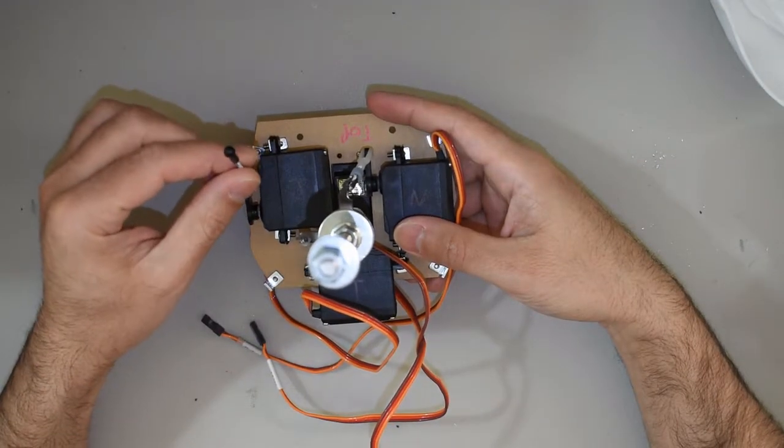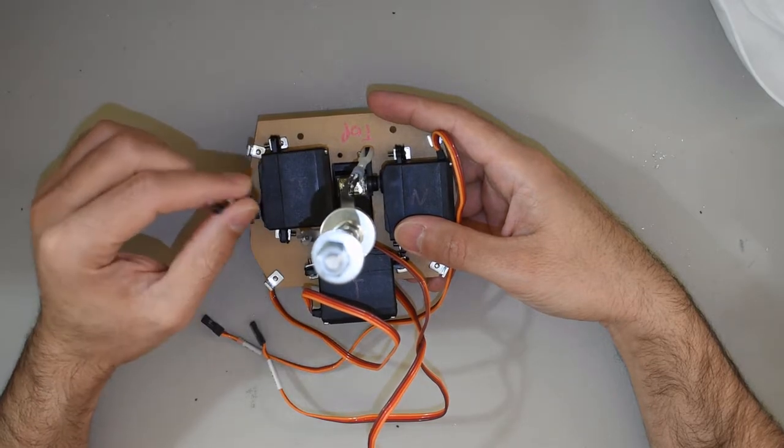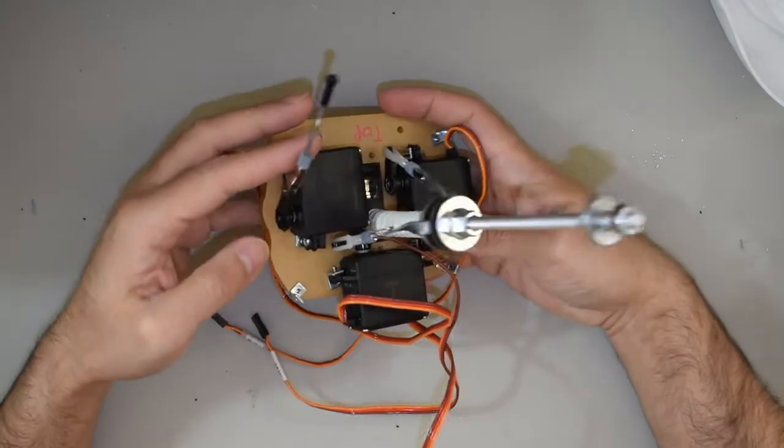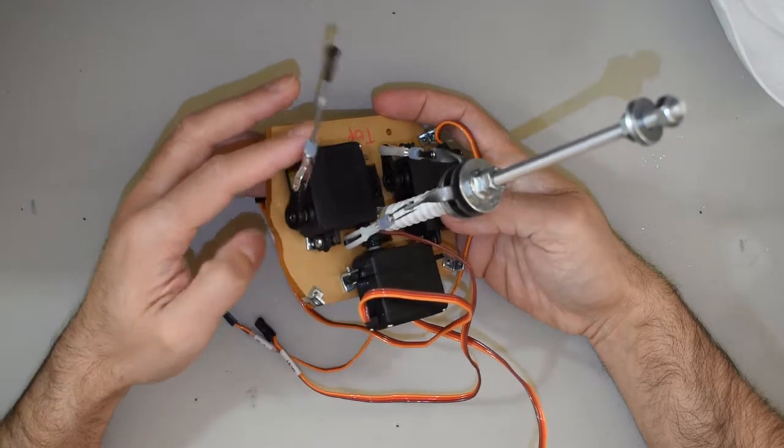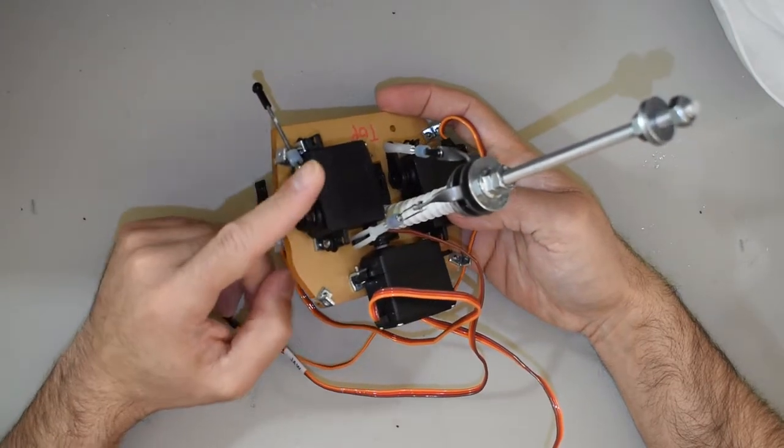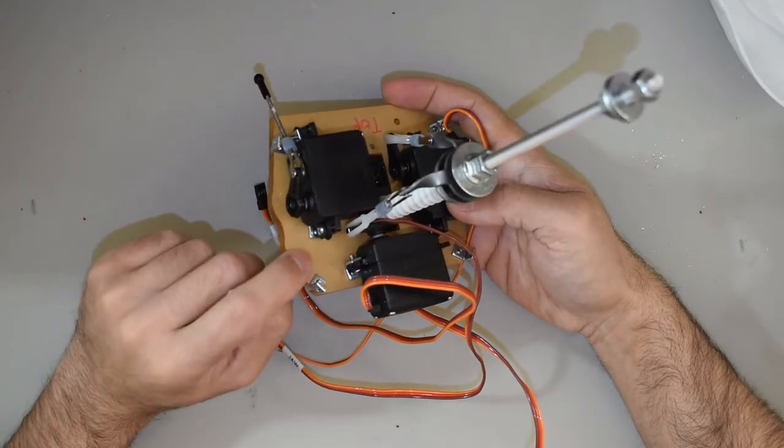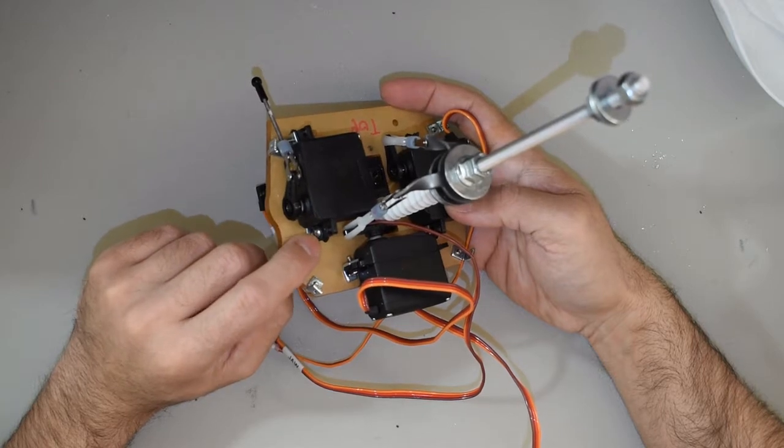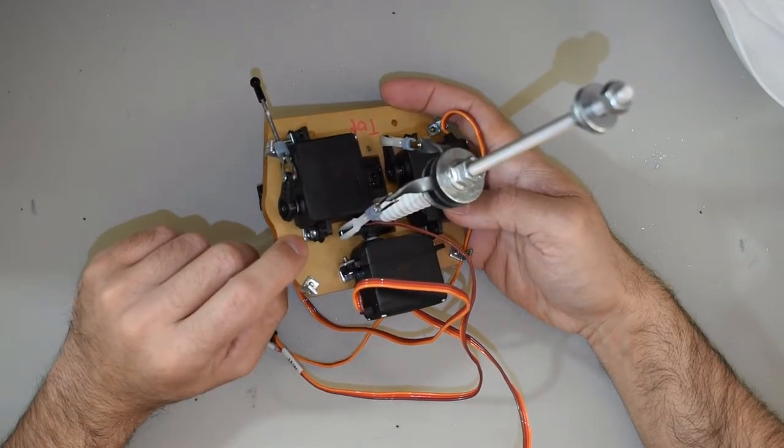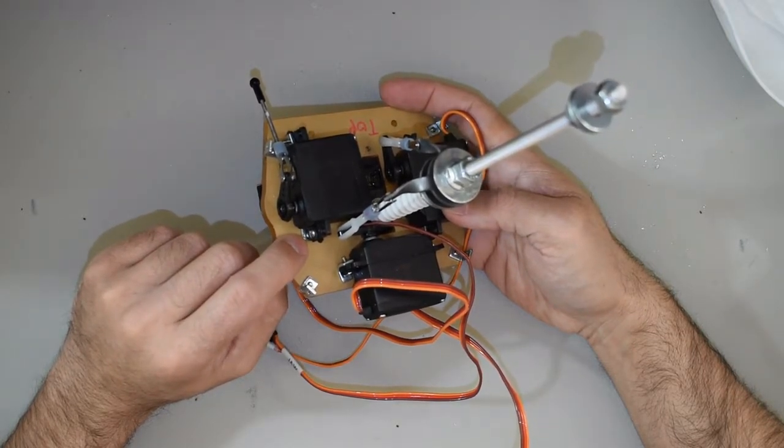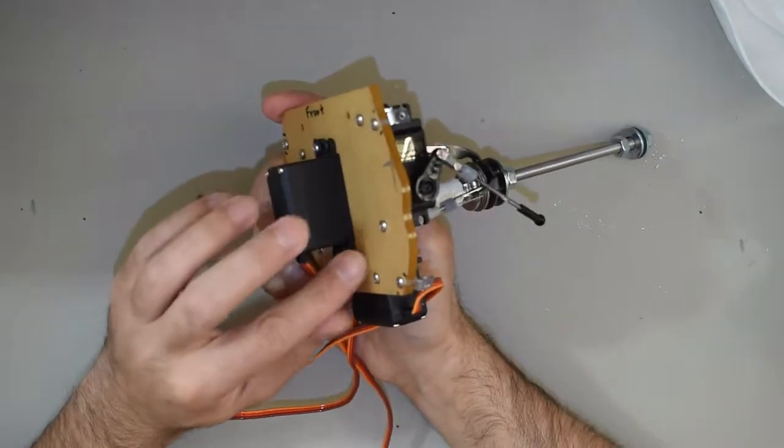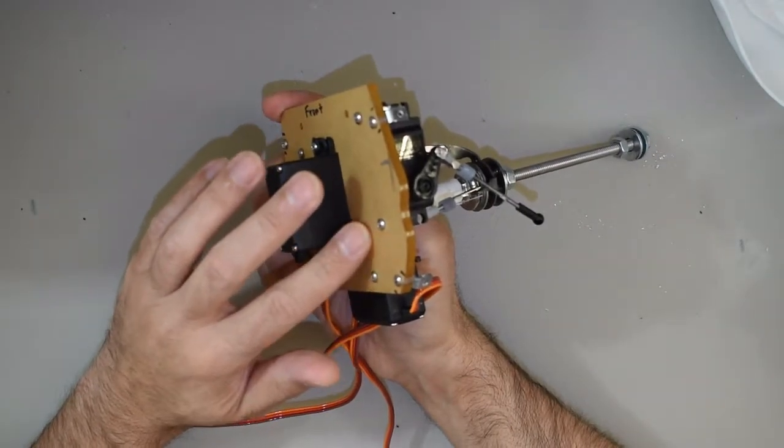Over here we have the servo that controls the jaw. Here you can see the positioning of the servo, and it's actually held down by little angle brackets and screws. These angle brackets that came with the kit are actually tapped and you mount them with the screws that came in the kit.